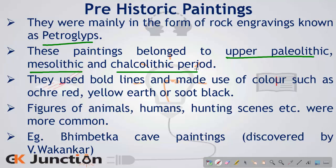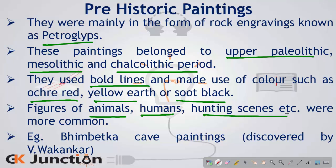In all these periods, the common features were bold lines made using colours such as ochre red, yellow earth, or soot black. These were all naturally occurring colours which humans at that point in time could make use of. Figures such as animals, humans, and hunting scenes were made on those rock engravings or petroglyphs.